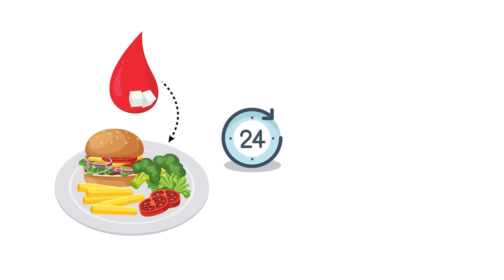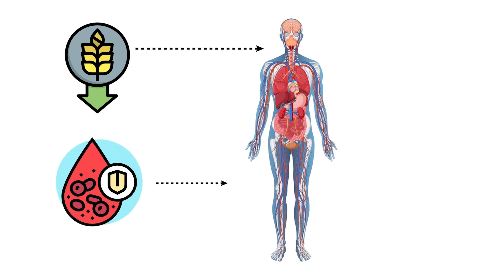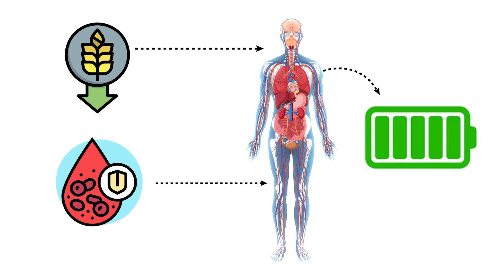By the 24-hour stage of fasting, the glucose from your last meal is gone, and your blood sugar and insulin levels have stabilized. With no new carbohydrates coming in and less insulin circulating, your system shifts away from storing energy and starts using what you already have.